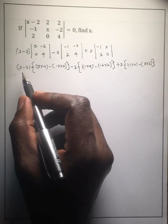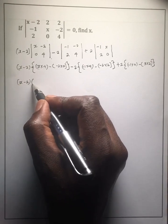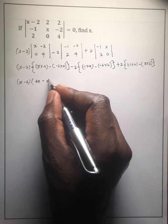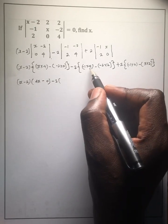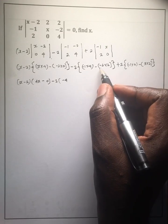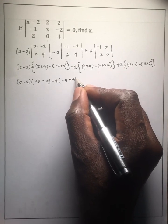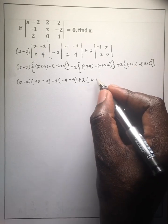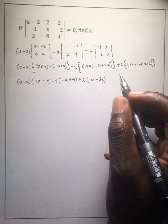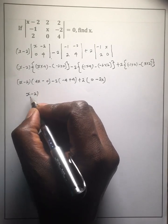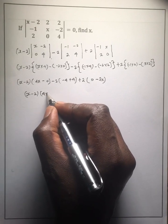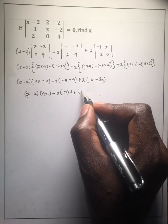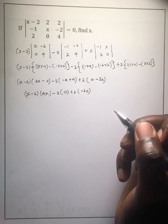Let us simplify that. We have x minus 2 times 4x — since negative 2 times 0 is 0. Minus 2 into negative 4 minus negative 4, so that is plus 4. Then minus 2, and plus 2 times 0 minus 2x. Simplifying: x minus 2 times 4x, minus 2 times 0, minus 2 times negative 2x.